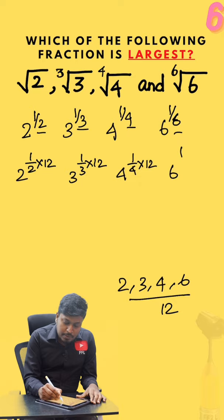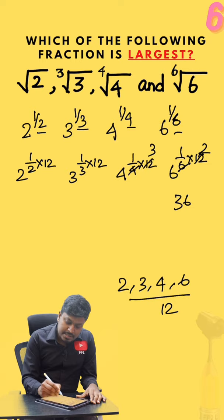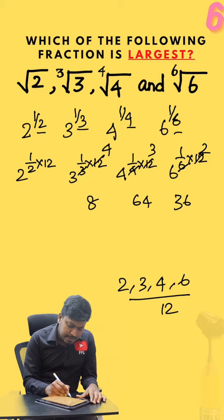So this becomes 2 to the 6, which is 64. This becomes 3 to the 4, which is 81. 4 power 3 will be 64, so this will be around 80 something. This will be 6 to the 2, which is 36. So this will be among 80.